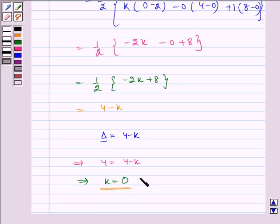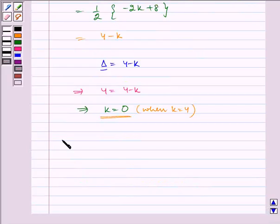Now this is the situation when k is equal to 0. Now when k is equal to 4, then minus 4 is equal to 4 minus k which implies k is equal to 8.